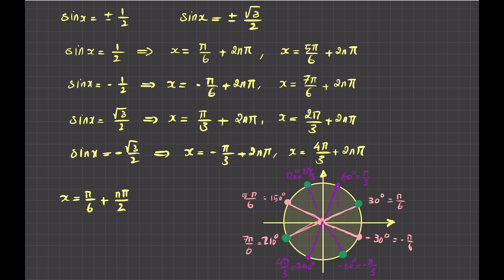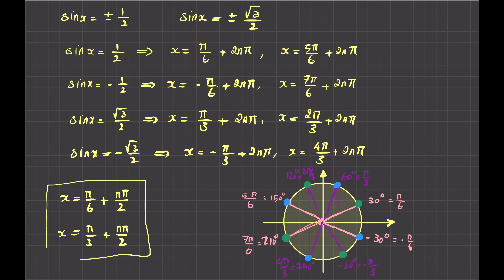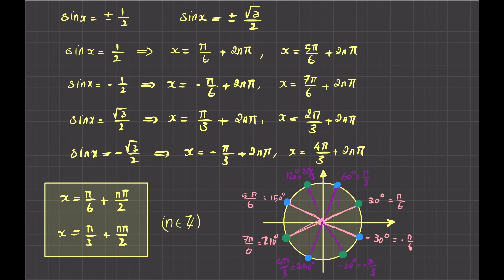Similarly, starting at 60 degrees (pi over 3) and advancing 90 degrees at a time gives 60, 150, 240, and 330 degrees — the blue dots at pi over 3, 2 pi over 3, 4 pi over 3, and minus pi over 3. So x equals pi over 3 plus n pi over 2 captures all blue dots. All eight solutions are now covered by just these two compact formulas, where n is an integer.